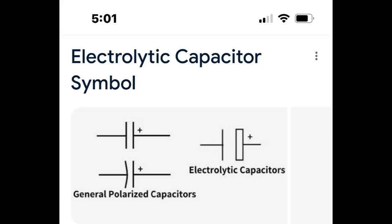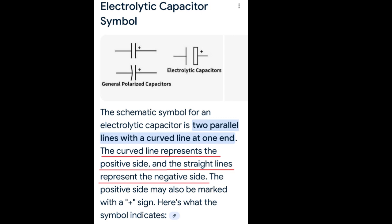Okay, so I decided to go to the internet for some clarification. Here we go, here's some nice drawings, makes a lot of sense, shows me where the positive is, where the negative is, got it. So, I read on a little bit further here. The schematic symbol for an electrolytic capacitor is two parallel lines with a curved line at one end. That doesn't make much sense, but okay. The curved line represents the positive side, and the straight line represents the negative side. Okay, fair enough.